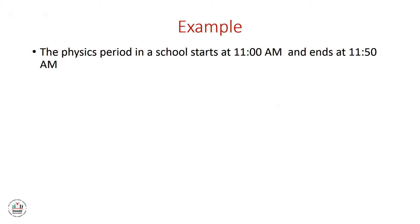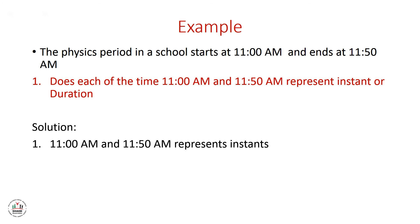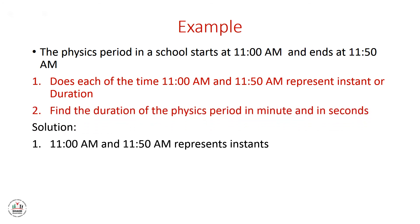Let's do another example. The physics period in a school starts at 11:00 a.m. and ends at 11:50 a.m. First question: do 11:00 a.m. and 11:50 a.m. represent instant or duration? Since these are the starting and ending times, they represent instants. Second question: find the duration of the physics period in minutes and then in seconds. We subtract 11:50 minus 11:00, giving 50 minutes. To convert to seconds, we multiply 50 by 60, giving 3000 seconds.